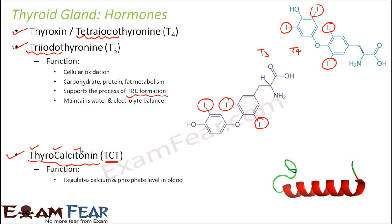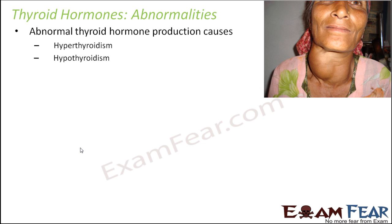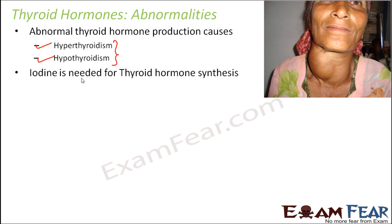Thyrocalcitonin decreases calcium levels when they go too high, as nutrients and hormones in the body must be present in the right amount — excess or deficiency both cause problems. Abnormal thyroid hormone production can cause diseases like hyperthyroidism or hypothyroidism, depending on whether too much or too little thyroid hormone is produced.